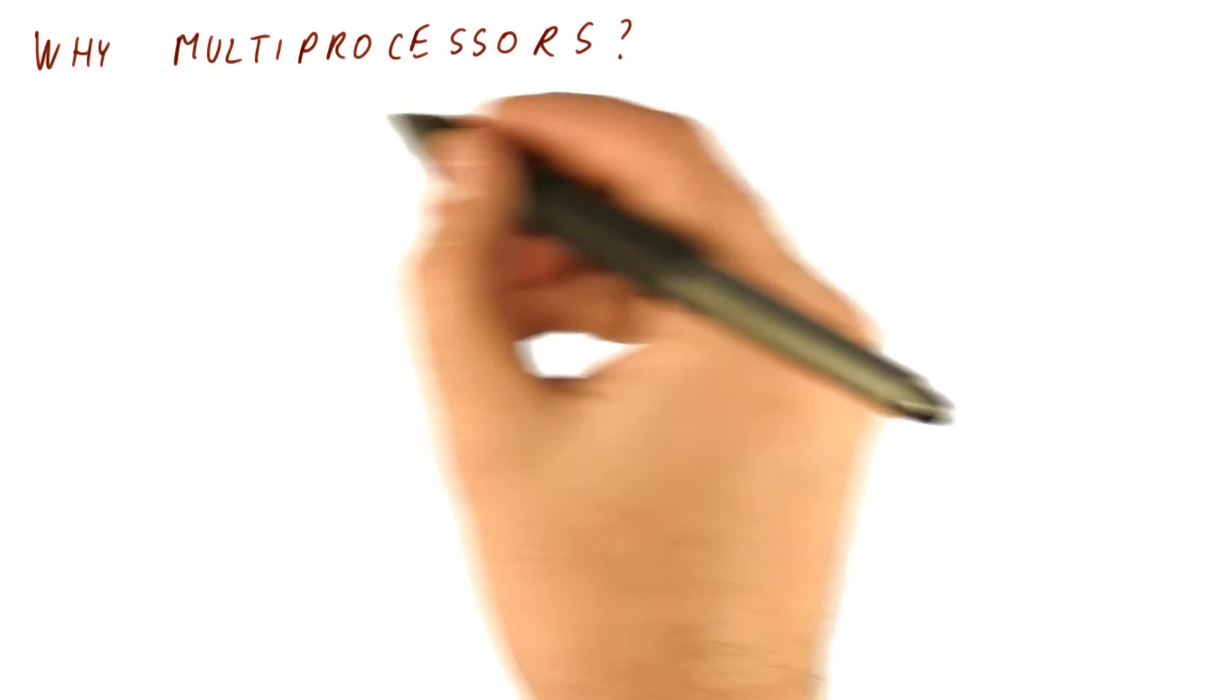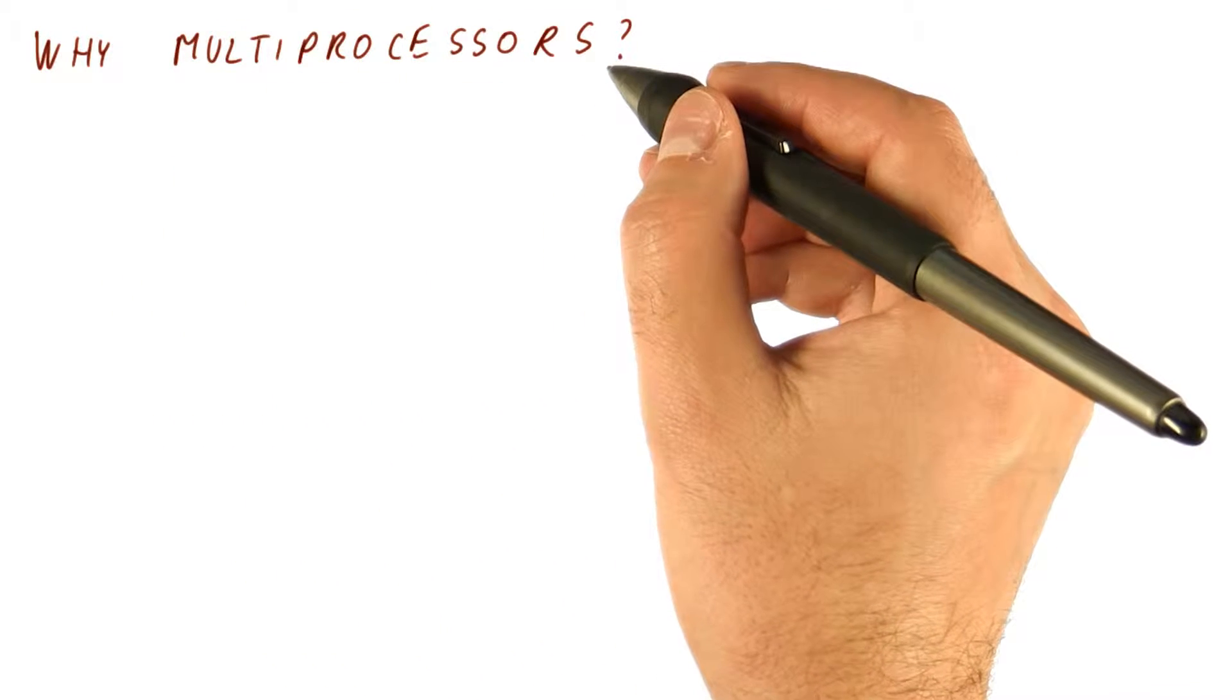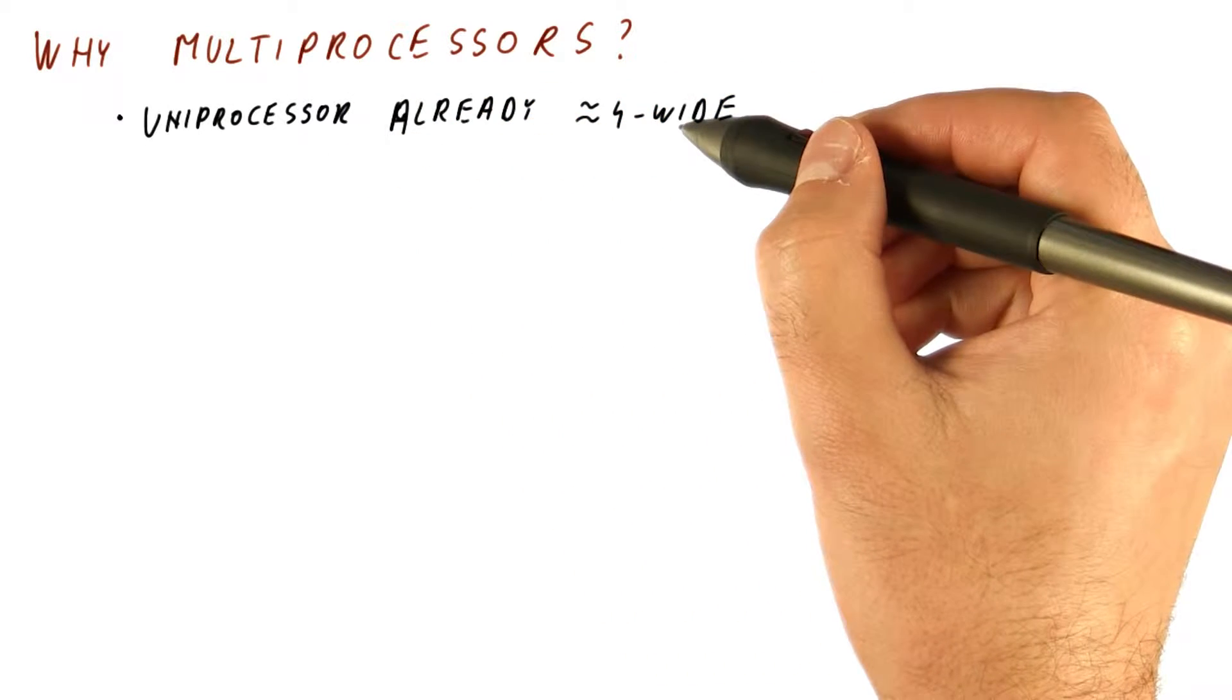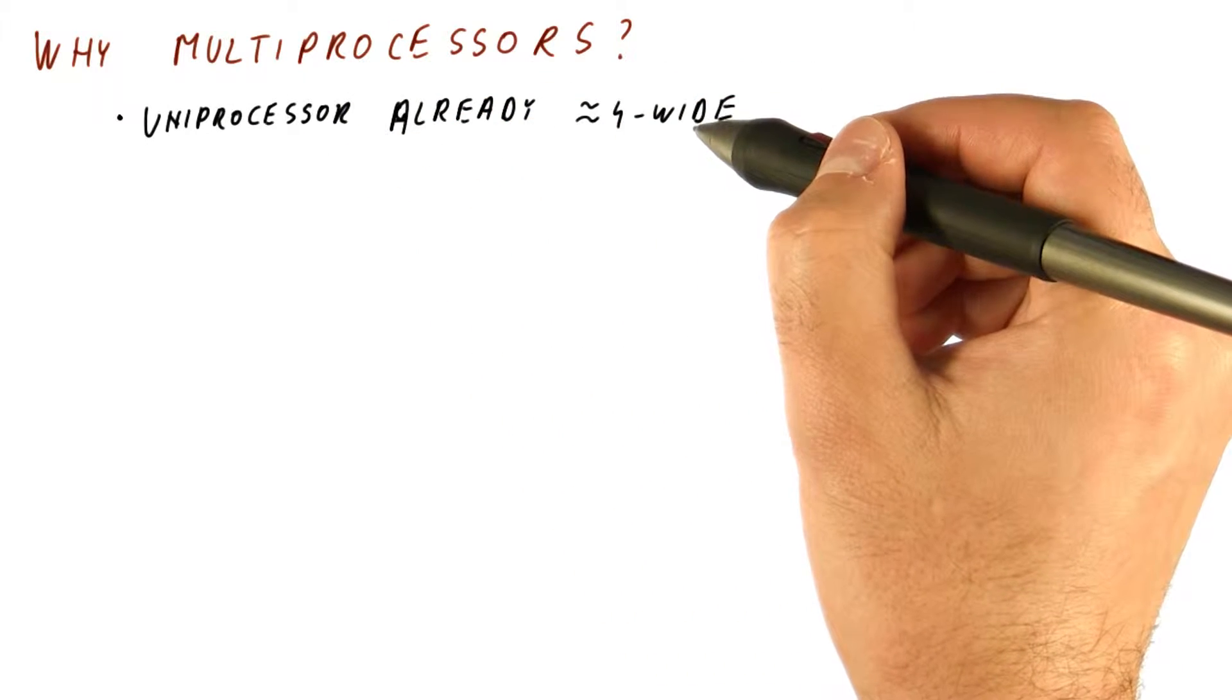So why do we want a multiprocessor? Why not just use uniprocessors? Well, first, our uniprocessors would already be four wide.